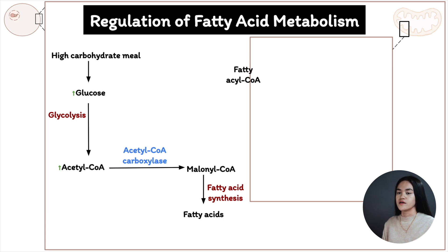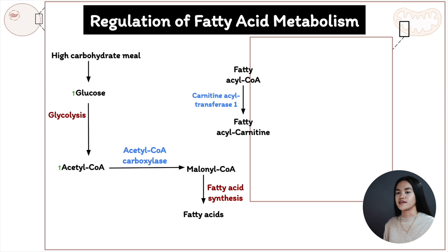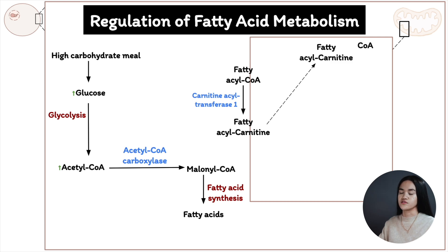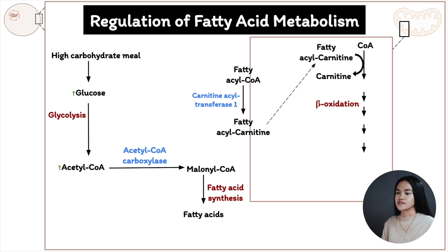Fatty acid oxidation begins with activating the fatty acid and converting it to a fatty acyl-CoA, catalyzed by fatty acyl-CoA synthetase. In the second step, CoA is substituted for carnitine to form fatty acyl-carnitine, formed in the outer membrane by carnitine acyl transferase 1. It then moves into the matrix by passive transport through the acyl-carnitine/carnitine co-transporter. Once in the matrix, the fatty acyl group is transferred back to CoA, catalyzed by carnitine acyl transferase 2 in the inner mitochondrial membrane.